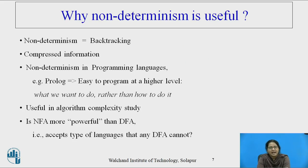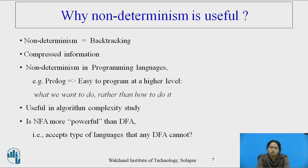All models or real-time examples are deterministic — you can take the example of a human being or any computer system. Why is non-determinism useful? Non-determinism is mainly used where lots of searching is required with the help of backtracking.